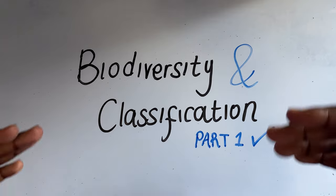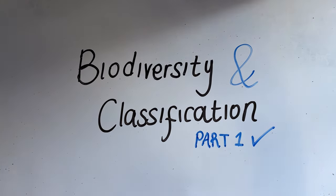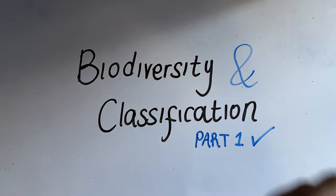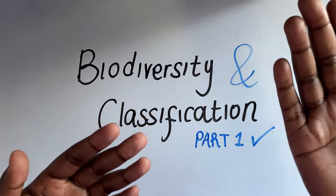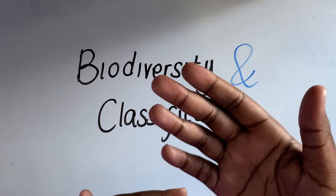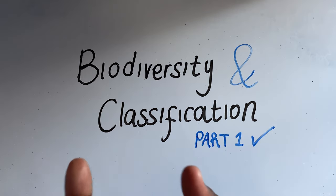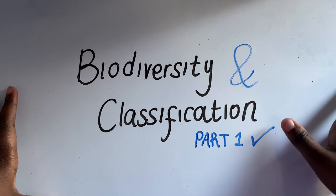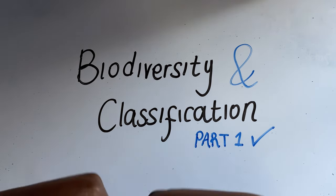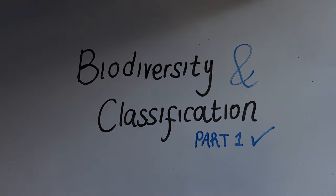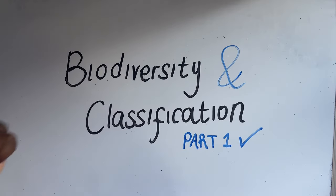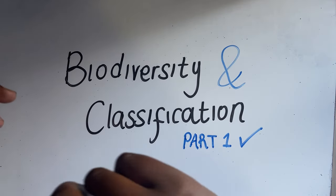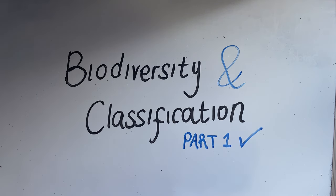We are now done with the first part of biodiversity and classification. We looked at biodiversity, classification, and taxonomy, which gave us the five kingdom system — Animalia, Plantae, Monera, Fungi, and Protista. We also looked at the binomial system introduced by Linnaeus, which we still use today. In the next video we'll be focusing on prokaryotes and eukaryotes. Don't forget to like, comment, subscribe, and share the video.